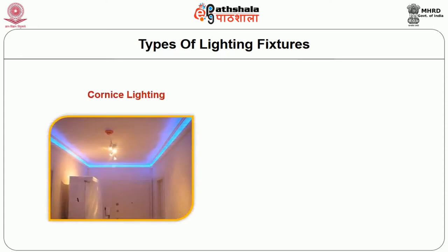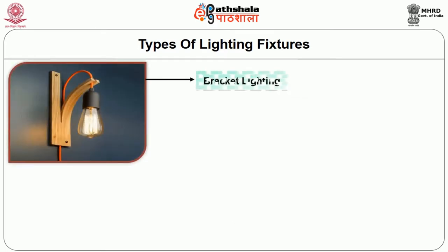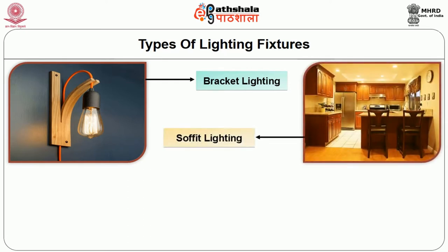Cornice lighting: a light behind a board mounted into the ceiling washes light down onto the wall. Valence lighting: a light used over the top of windows washes both the ceiling and the window treatments. Bracket lighting mounted lower on the wall washes the upper and perhaps lower wall with light. A light placed just below the ceiling has the board or deflector beneath it. Soffit lighting, used in a kitchen, is built into the soffit and shines downward from the top of the cabinet overhead. Soffit lighting can also be used in a bathroom to provide even illumination for personal grooming.